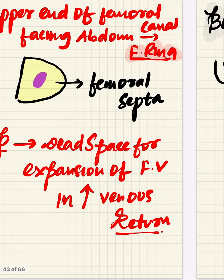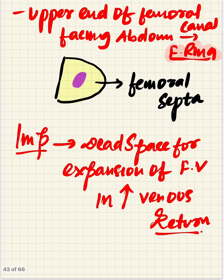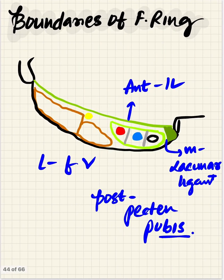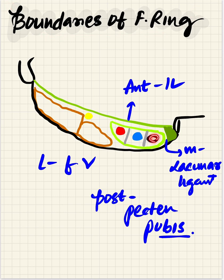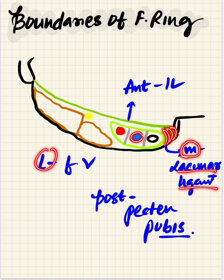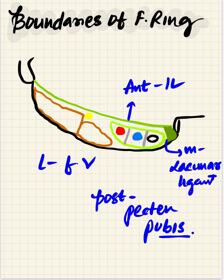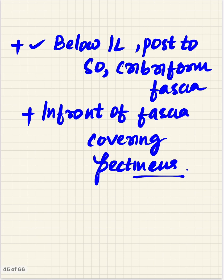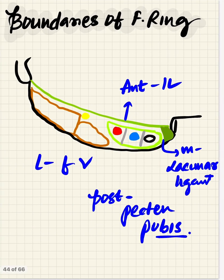The boundaries of the femoral ring are: medially - the sharp lacunar ligament; laterally - the femoral vein; anteriorly - the inguinal ligament; and posteriorly - the pecten pubis. The femoral ring is located below the inguinal ligament, posterior to the saphenous opening and cribriform fascia.